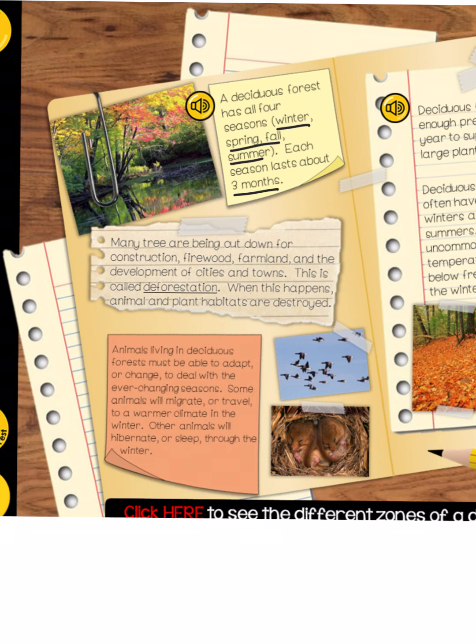Many trees are being cut down for construction, firewood, farmland, and the development of cities and towns. These are clearly problems that are facing the deciduous forest and the living organisms that live there. So I can label that information in my flipbook and return to it when I'm making my t-chart.